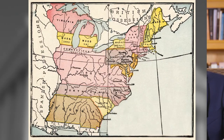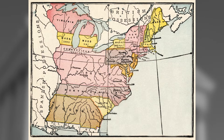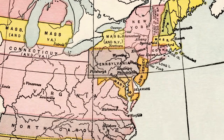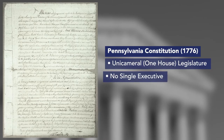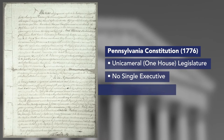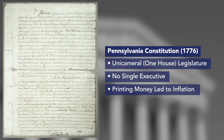All these problems were exacerbated by the state constitutions created starting in 1776. One really important example is the Pennsylvania Constitution. It created a unicameral legislature — a legislature with one house rather than two. There was no single president; instead, there was an executive council. This one-house legislature started printing a lot of money to pay debts, and as a result, there was a lot of inflation.